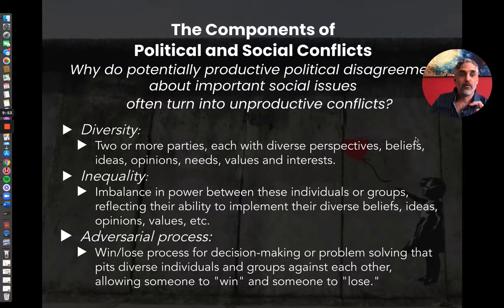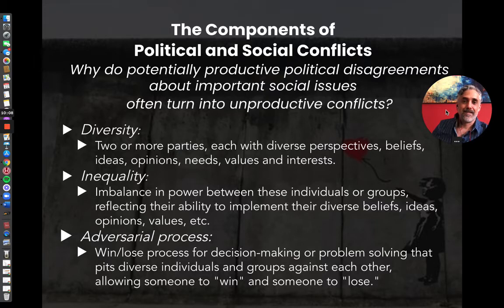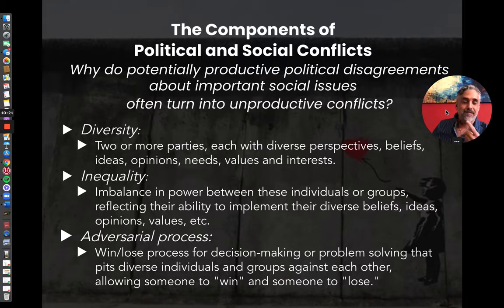Now let's look at the core ingredients of a political or social conflict — this helps us understand why productive political disagreements turn into unproductive conflicts. If you want to have an unproductive conflict, here are the three ingredients you need. First, you need diversity of opinions and perspectives — two or more people or groups with different ideas, beliefs, opinions, needs, values, and interests all competing to get their voices heard.